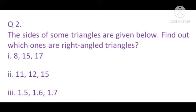Question number 2: The sides of some triangles are given below. Find out which ones are right-angled triangles. Previously, if we know the angles we can say whether it is a right-angled triangle or not. But now we are given the side lengths. By using Pythagorean triplets, we can detect whether it is a right-angled triangle or not. We have to first identify whether the given triplets are Pythagorean triplets or not. If they are Pythagorean triplets, then it is a right-angled triangle.